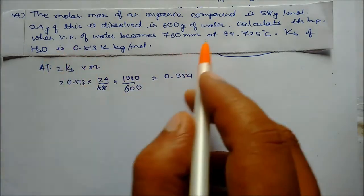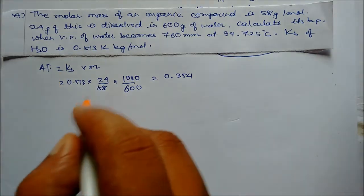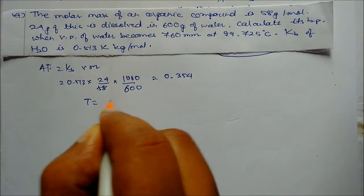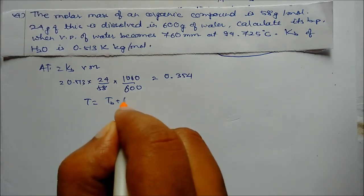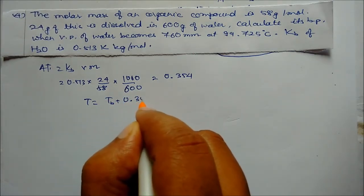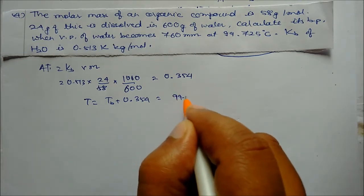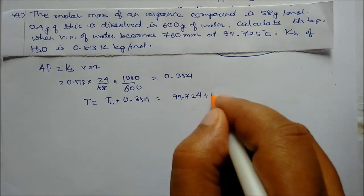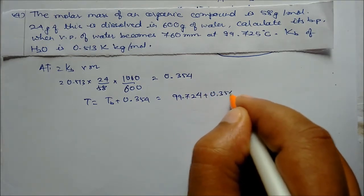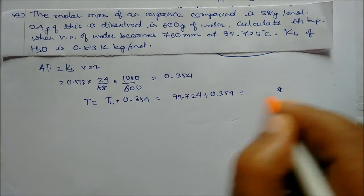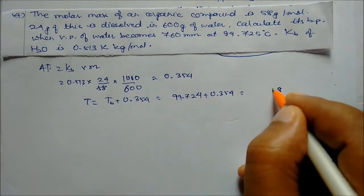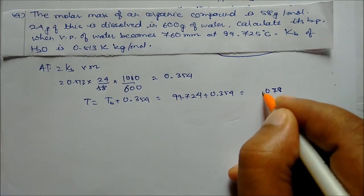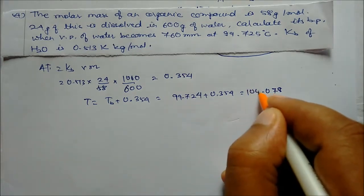Delta T = 0.354, so the boiling point T = 99.725 + 0.354 = 100.079°C. This is our answer for the boiling point of the solution.